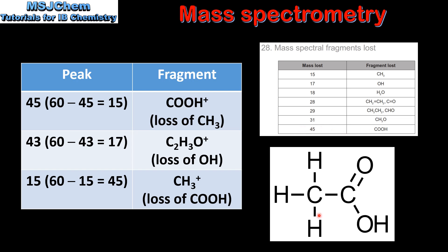Here we have the structure of ethanoic acid. As you can see, it contains a CH3 group, an OH group, and a COOH group. This structure is consistent with the fragmentation pattern observed in the mass spectrum, demonstrating that mass spectrometry gives us information about the structure of a compound.